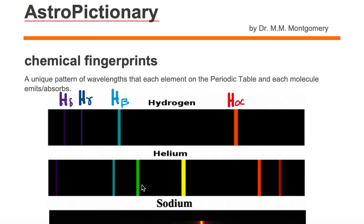So this is what we mean by chemical fingerprints, a unique pattern of wavelengths that each element on the periodic table and each molecule either emits or absorbs at those wavelengths.